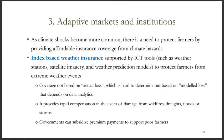The third domain of climate-smart agriculture is improving markets and institutions. As climate shocks become more common, there is a need to protect farmers from climate hazards by providing them with affordable insurance coverage. Index-based weather insurance supported by ICT tools can be used to protect farmers from extreme weather events. It provides rapid compensation in the event of natural disasters such as wildfires, droughts, and floods. Governments can subsidize premium payments to support poor farmers.